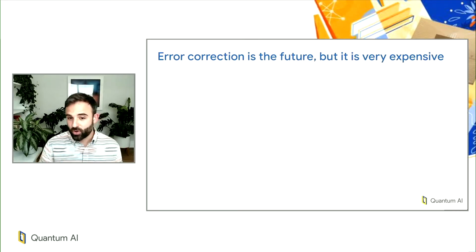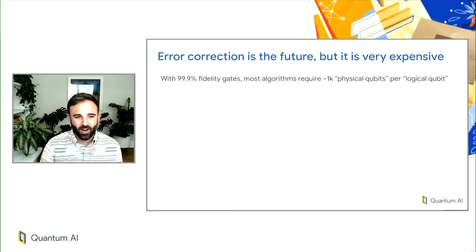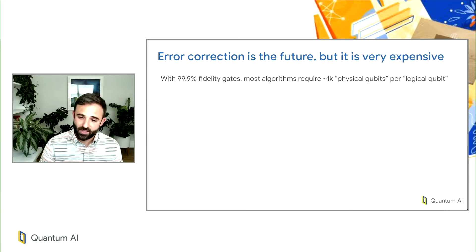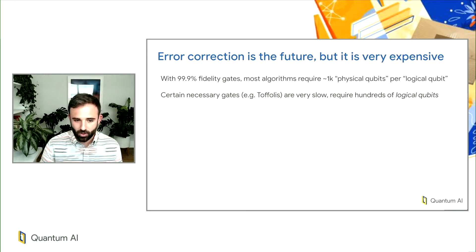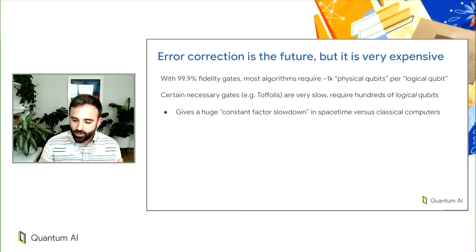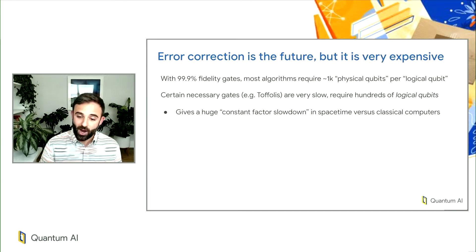Error correction is the dream of quantum computing, but it is very expensive. With 0.1% error rate gates, most algorithms are going to require about a thousand physical qubits per logical qubit. Furthermore, certain gates necessary for universality like T gates or Toffoli gates are very slow and will require hundreds of logical qubits.